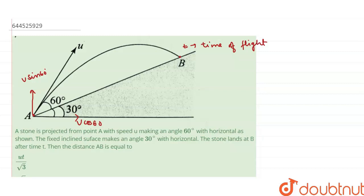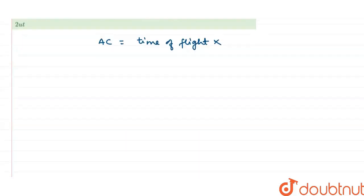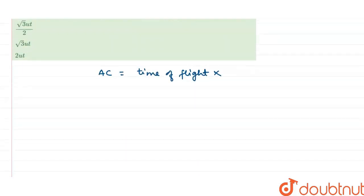Suppose there is no inclined plane and this B is here at this horizontal plane. Suppose this point is C. Now the distance AC can be calculated by time of flight into velocity. So it is time of flight that is given in the question, which is t, into velocity in horizontal direction, it is u cos 60. So I can write u cos 60.